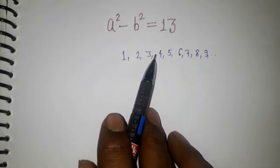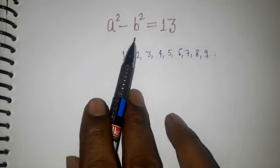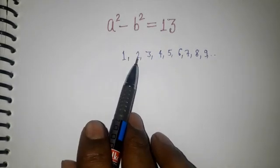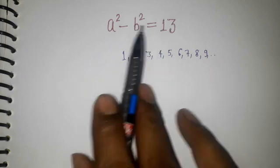...a as 3, so 3² = 9, and b is 2. So 9 - 4 is coming as 5. That is not there.